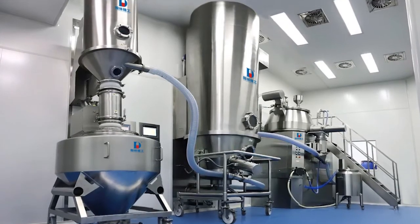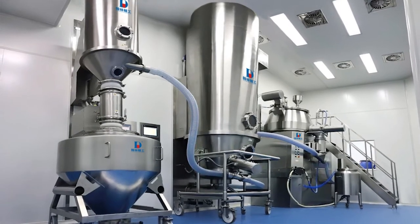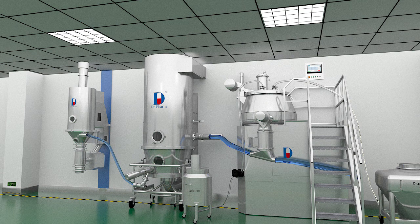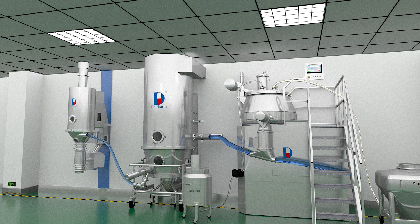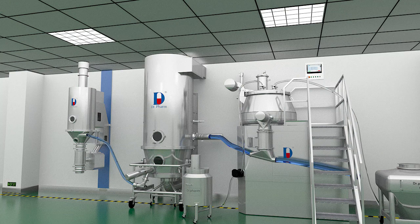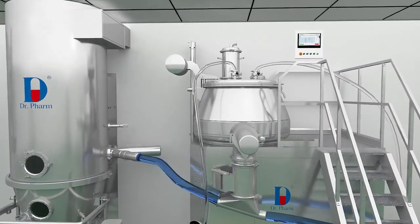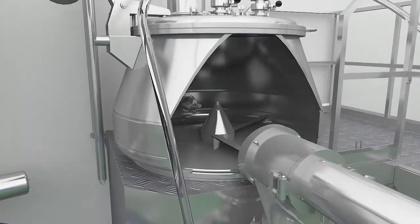High shear mixer with vacuum loading or gravity loading. The pot body is designed with a cylinder and a cone. The diameter of the pot body is large, the cylinder section is short, the cone section is high, and the mixing efficiency is high.